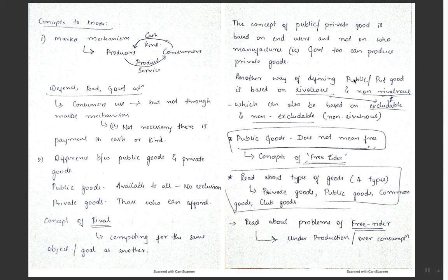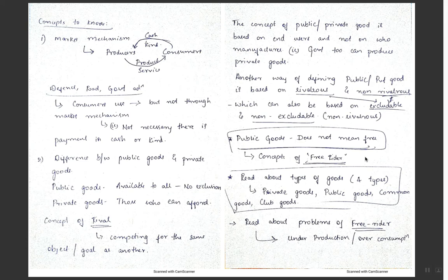We are studying economic concepts applicable across multiple kinds of countries and setups. There are four types of goods — please look into them. When public goods are provided, there is a concept called the free rider problem. When resources are provided publicly, there could be people who are not paying anything for them. The guys who bear the cost and those who don't both get to use it — like a public park open to all.